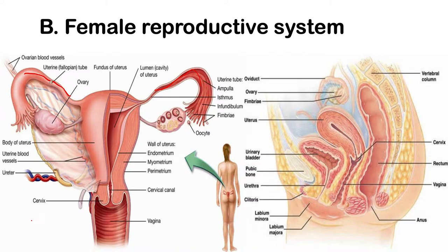If the oocyte meets a sperm cell, another ciliated action of your uterine tube sweeps the fertilized egg cell down into your uterus.